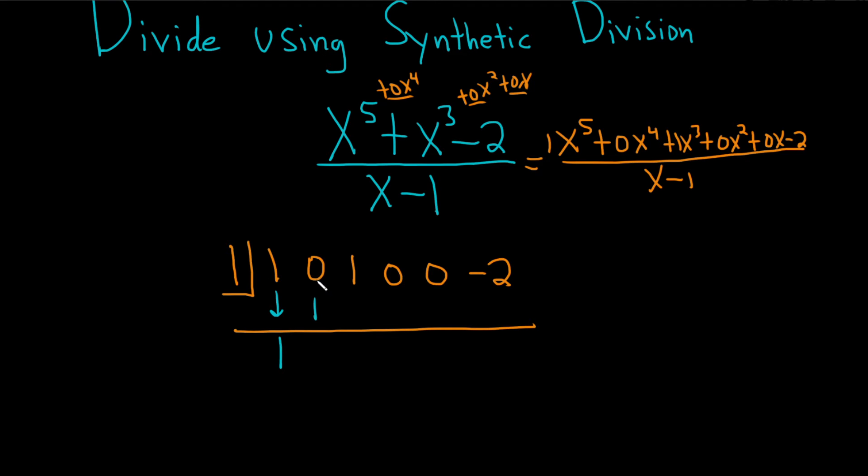1 times 1 is 1, and then you add 0 plus 1 is 1. Again, 1 times 1 is 1, 0 plus 1 is 1. Then you do it again. 1 times 1 is 1, 1 plus 1 is 2.